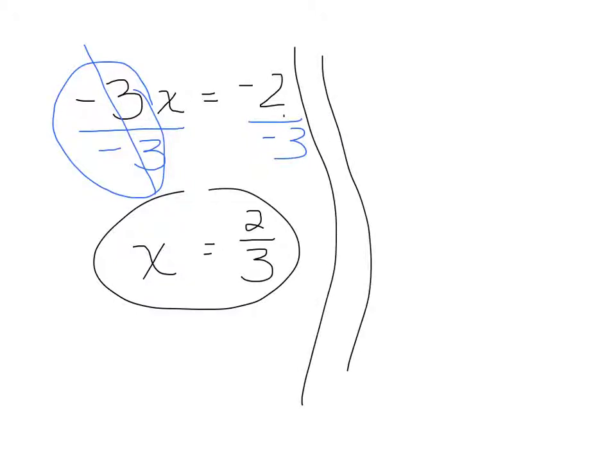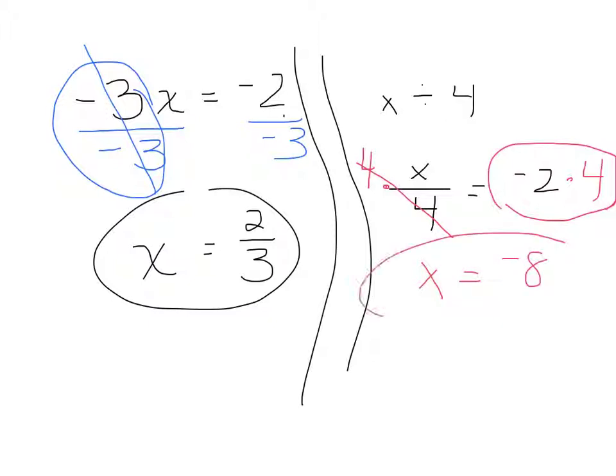What if I have a number x being divided by 4, or I can also rewrite that as x over 4 is equal to, say, negative 2? Well, instead of dividing by 4, if I multiply both sides by 4, the 4s cancel out, leave me with x, and then I'm left with negative 2 times 4, which is negative 8.